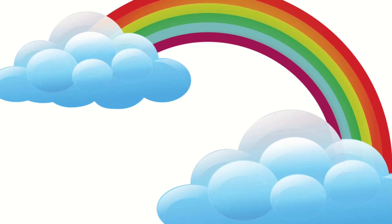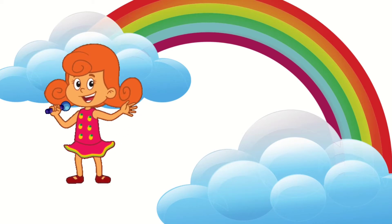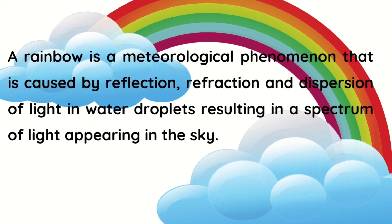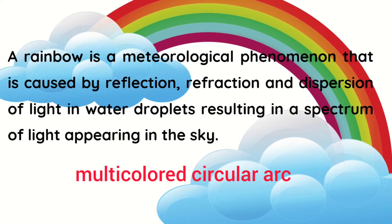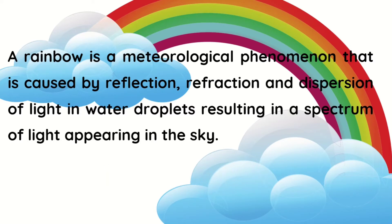Now, what do you see on the screen? You may be familiar with the popular song by South Border here in the Philippines — 'There's a rainbow always after the rain.' A rainbow is a meteorological phenomenon that is caused by reflection, refraction, and dispersion of light in water droplets, resulting in a spectrum of light appearing in the sky. It takes the form of a multicolored circular arc. Rainbows caused by sunlight always appear in the section of the sky directly opposite the sun.